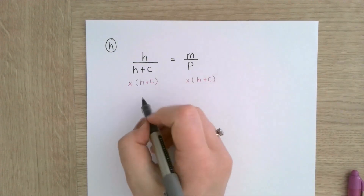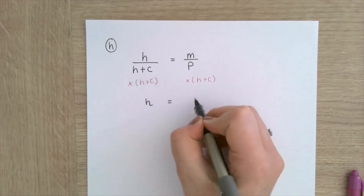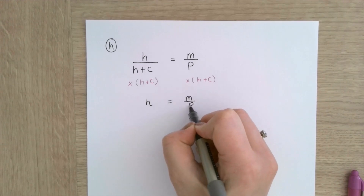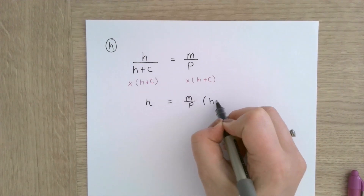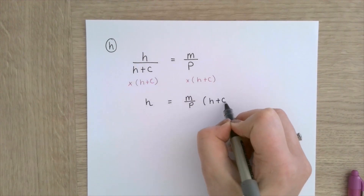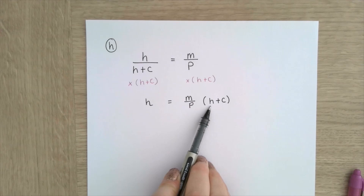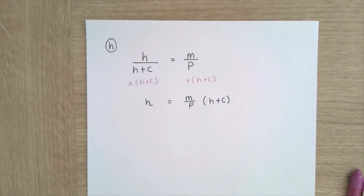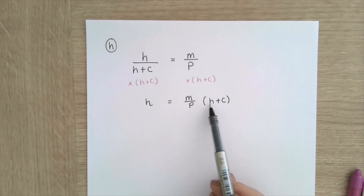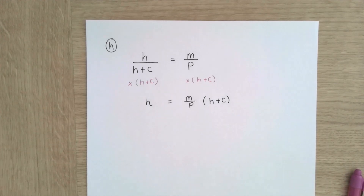So that is going to leave me with h equals m over p multiplied by h plus c. Now you're probably thinking — great, that's it, done. Sadly, I have not made h the subject because I have still got h on both sides. So I need to do a little bit more; h is not the subject at the moment.